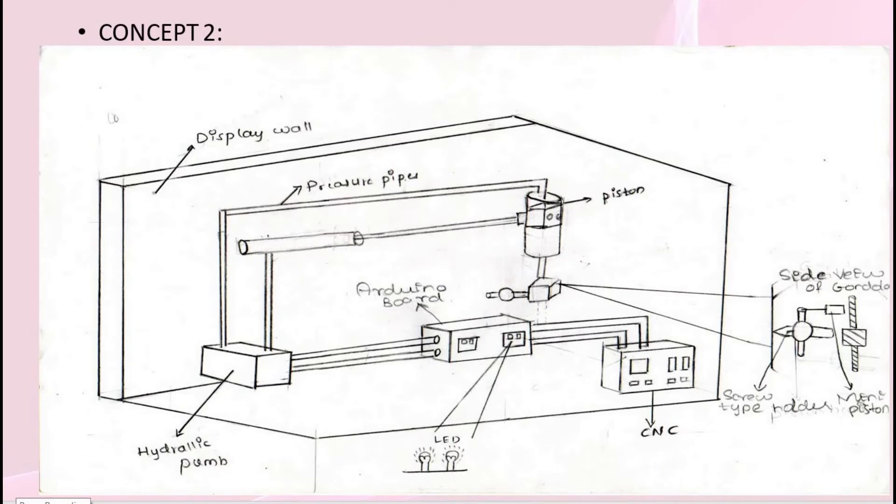Concept 2: Here we have used display wall, pressure pipe, piston, Arduino board, hydraulic pump, LED, CNC, and we have a side view of gondola here where it consists of screw type holder and a mini piston.